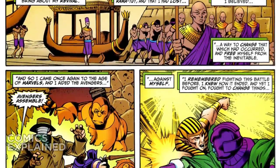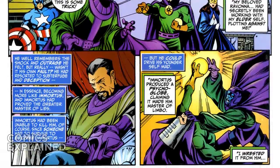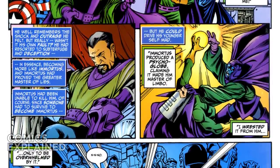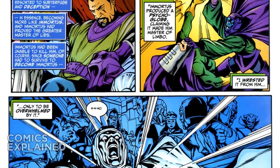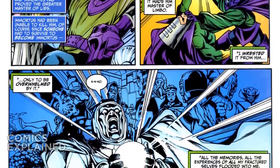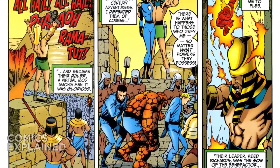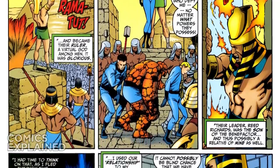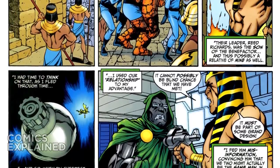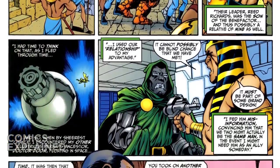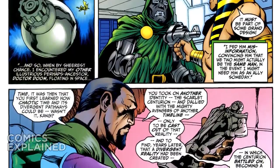Avengers Forever revealed that Kang, Rama-Tut, and Immortus were all basically the same person. Immortus was the end result of what Kang would become — chronologically you have Rama-Tut, then Kang, then Immortus, with Iron Lad and Kid Immortus in between. Rama-Tut went into the past, adopted the moniker of Kang, and then at some future point Immortus would come into existence. We didn't really know how, we just knew that he would.